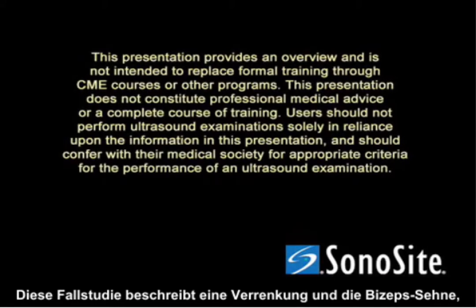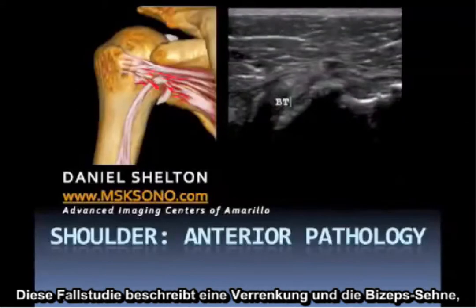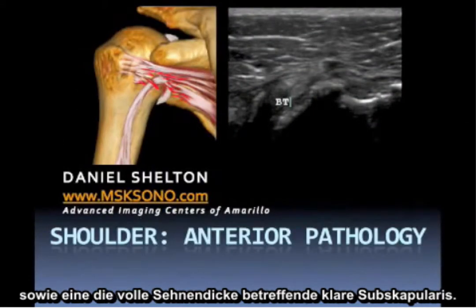This is a case study describing a dislocation of the bicep tendon as well as a full thickness tear of the subscapularis.